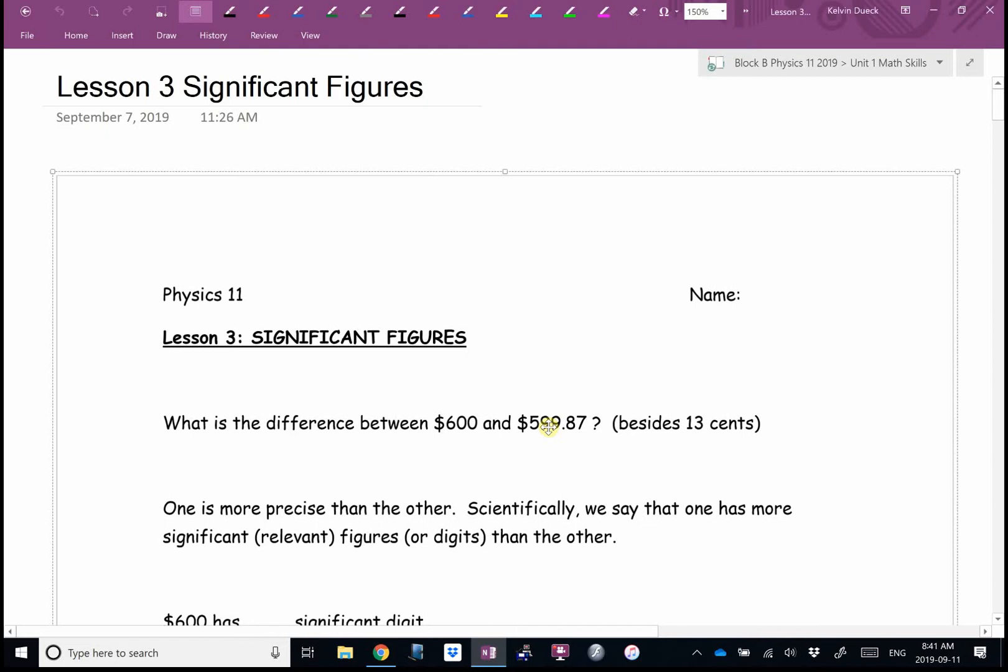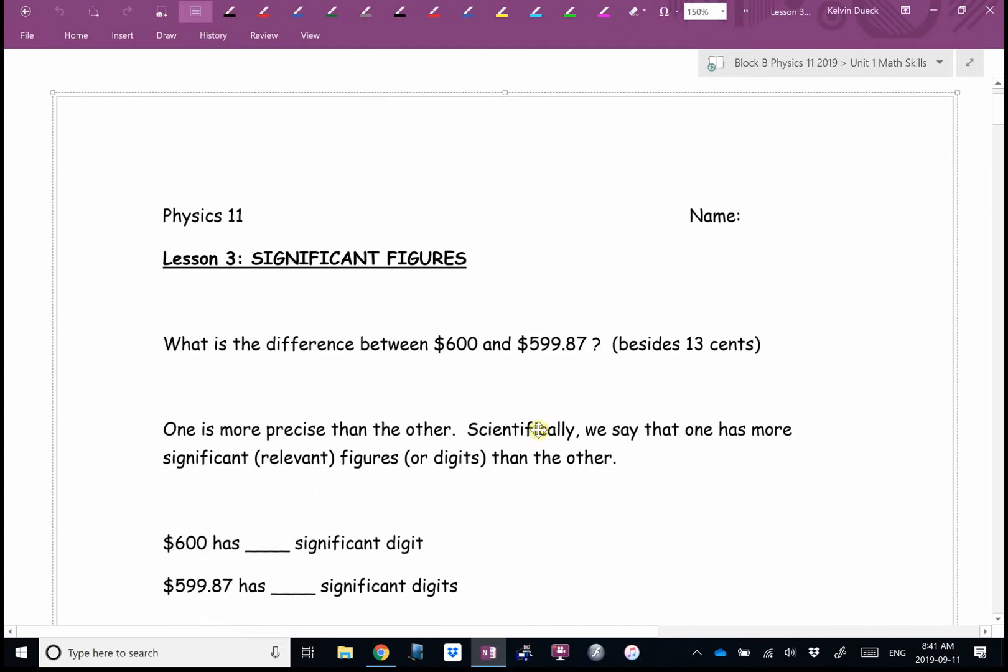Lesson three: significant figures, often abbreviated sig figs or significant digits. What's the difference between $600 and $599.87? Besides the obvious thirteen cents, one number is more accurate than the other. If you tell me something costs $600, I don't think it cost exactly $600.00. But if you say $599.87, I'm pretty sure it cost exactly that.